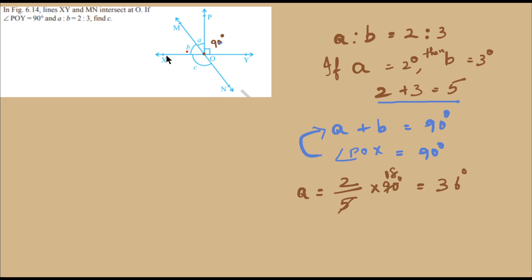Similarly, angle B equals 3 parts of 5 times 90 degrees. That's 18 times 3, which equals 54 degrees.